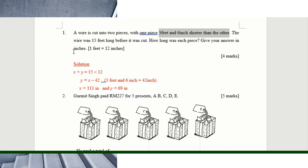So x plus y equals 15 times 12 — both pieces added together is 15 times 12, which is the total in inches. One piece is three feet and six inches shorter, meaning one piece is x minus 42, because 3 feet 6 inches equals 42 inches. So one piece is 42 inches shorter than the other.